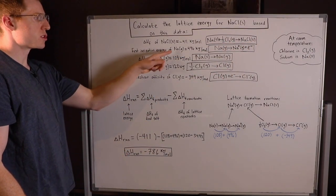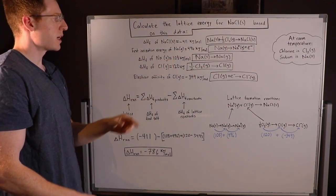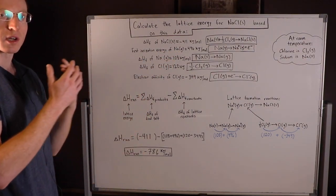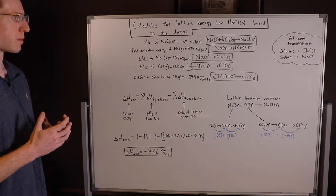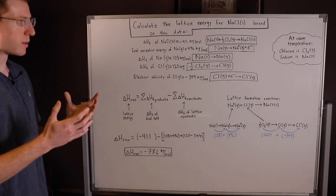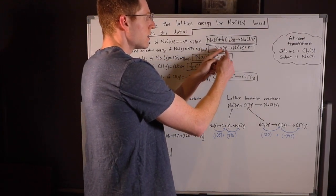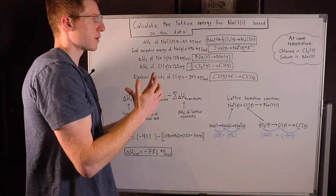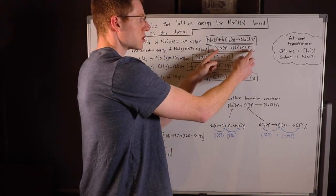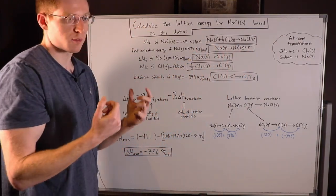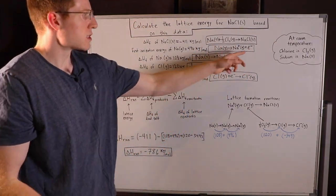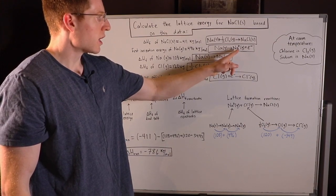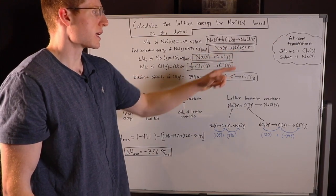The first ionization energy of sodium gas — ionization energy refers to the energy given off when you steal an electron from something, or it could be energy absorbed. So sodium gas goes to sodium plus, plus the electron that we stole from it. You steal an electron away from something, and since electrons have a negative charge, you leave the product with a plus charge. And of course, it's still in the gaseous state.